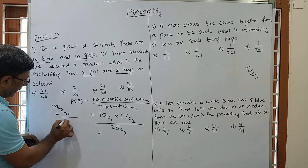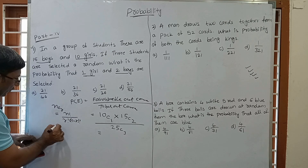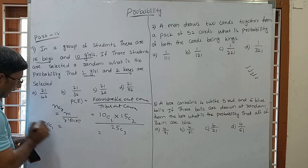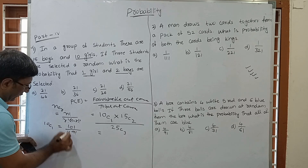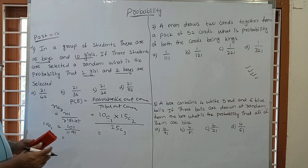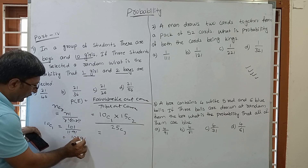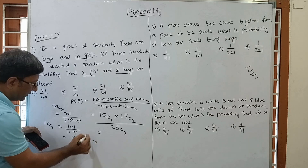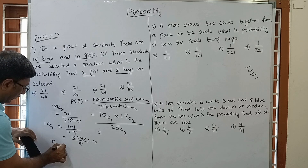The formula for NCR is: N factorial divided by (R factorial × (N−R) factorial). For example, 10C1 = 10! / (1! × 9!) = 10 × 9! / (1 × 9!) = 10. So the rule is: NC1 equals N. So 10C1 = 10.